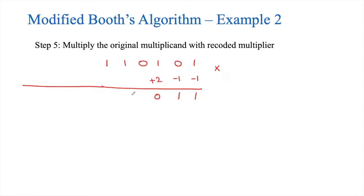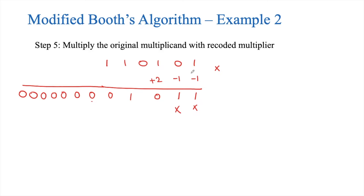Now we have to shift twice for the second partial product because this is a radix-4 scheme. The location 4 power 1 equals 4, which corresponds to binary location 2 power 2, also equal to 4. So we start the second multiplication shifted by two places. We multiply again by minus 1, writing the two's complement form: 1 1 0 1 0 0. The sign bit is 1, so we copy it for sign extension.